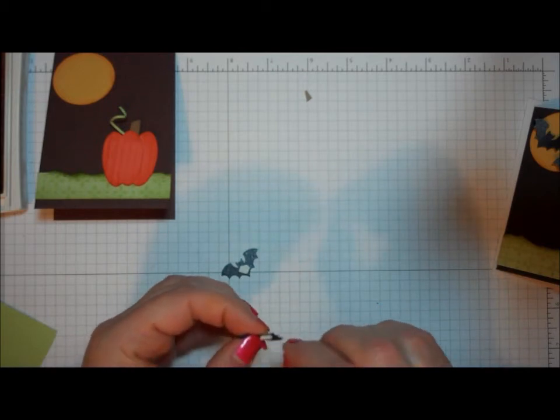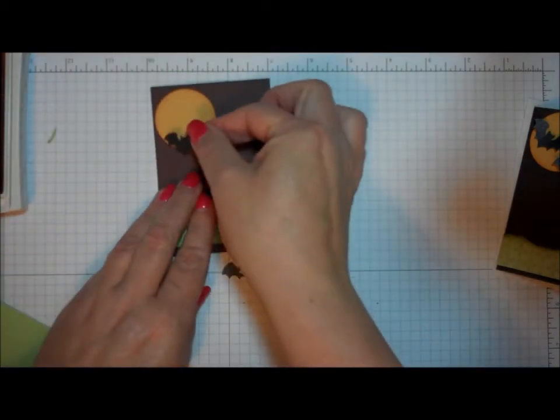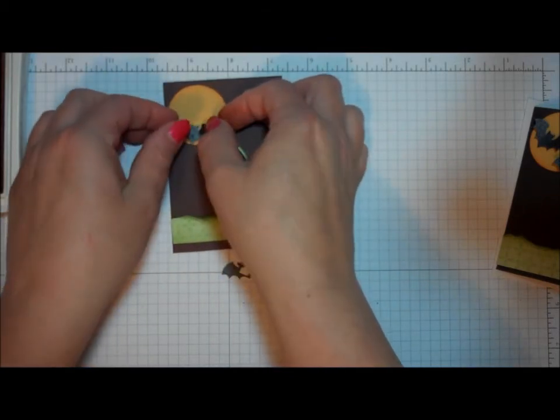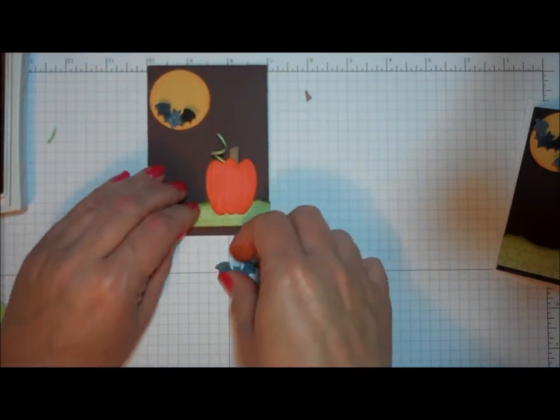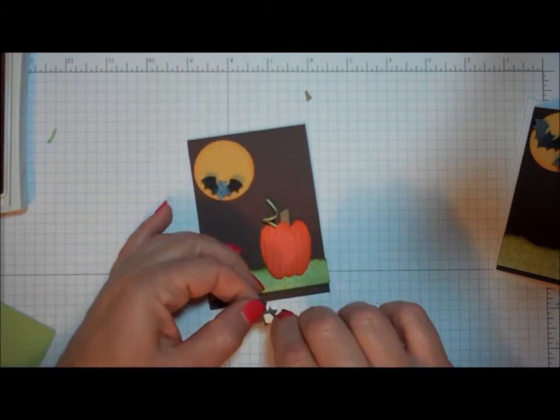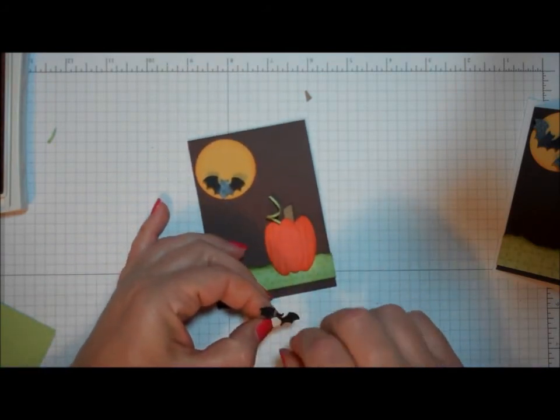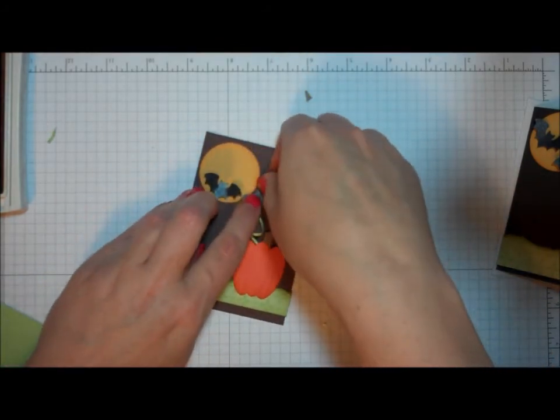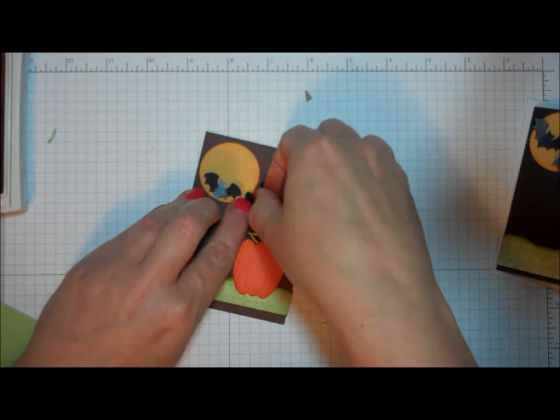I'm going to peel that off. I put one bat kind of flying up on the moon, and I bend the little wings on the bat up just to give the card a little more dimension. And then I'm going to take my other bat. I'm going to have him flying kind of towards the moon, and also bend those up.